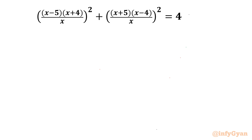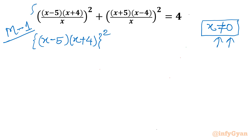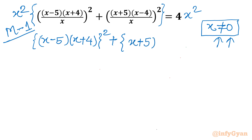I will showcase three different methods to solve this problem. Let's get started by writing Method 1 and the domain of the equation. The denominator cannot be 0, so x cannot be 0. Since x is non-zero, I can multiply both sides with x squared. This gives us (x minus 5)(x plus 4) whole squared plus (x plus 5)(x minus 4) whole squared equal to 4x squared.